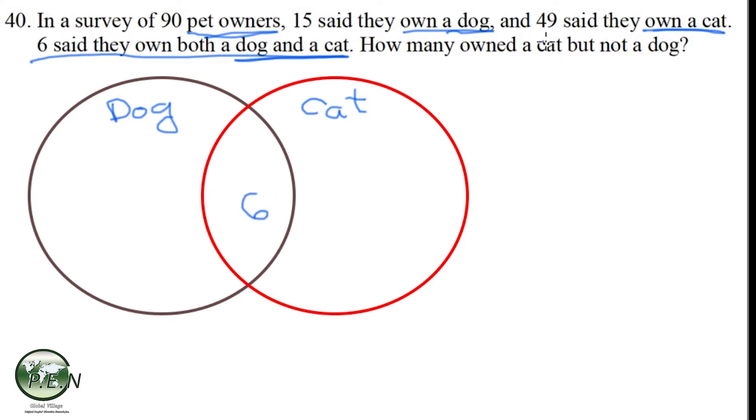As we work backwards, we see that we have 49 cat owners. So the red circle contains a total of 49. We've already accounted for six of them.